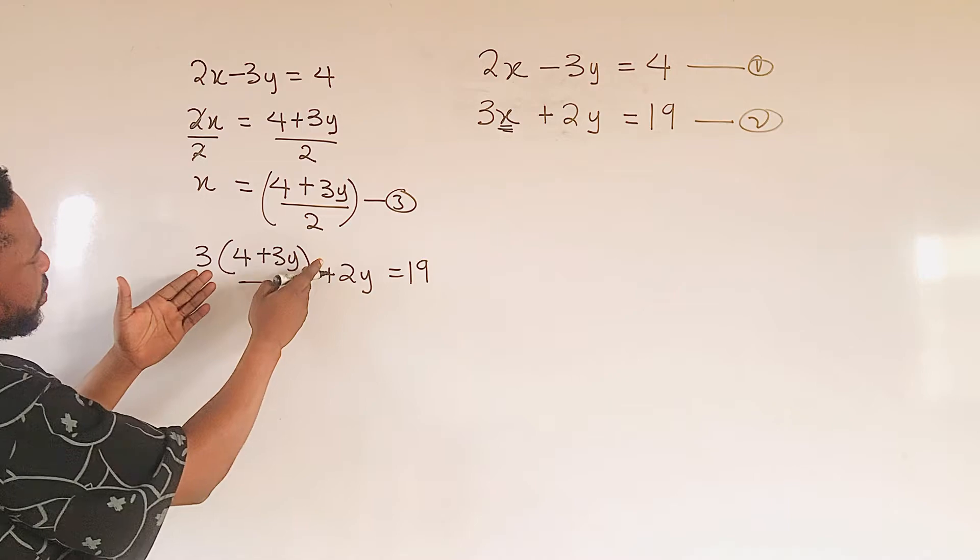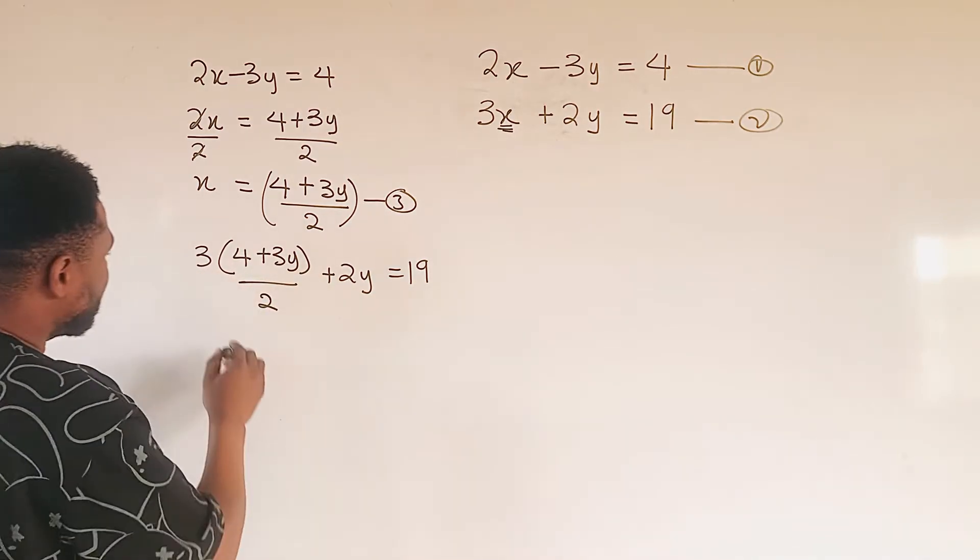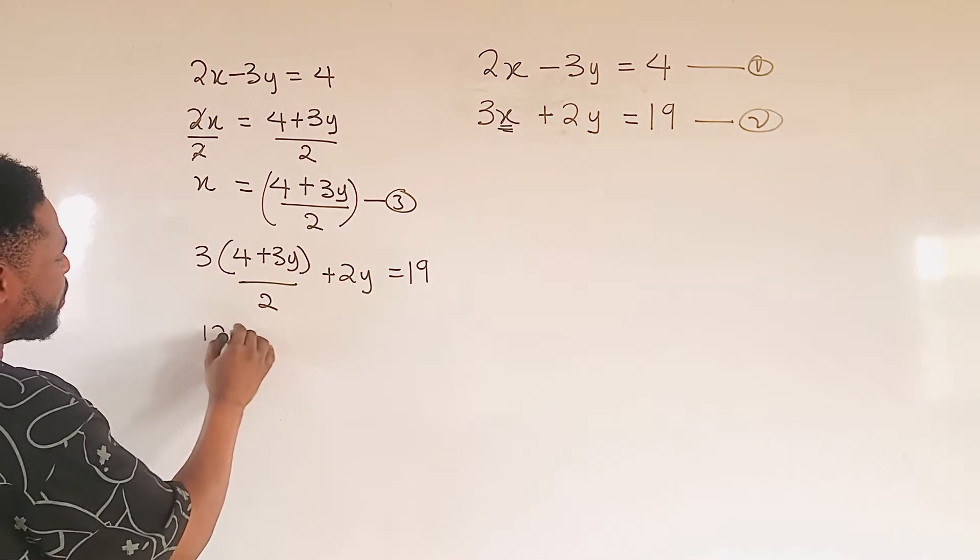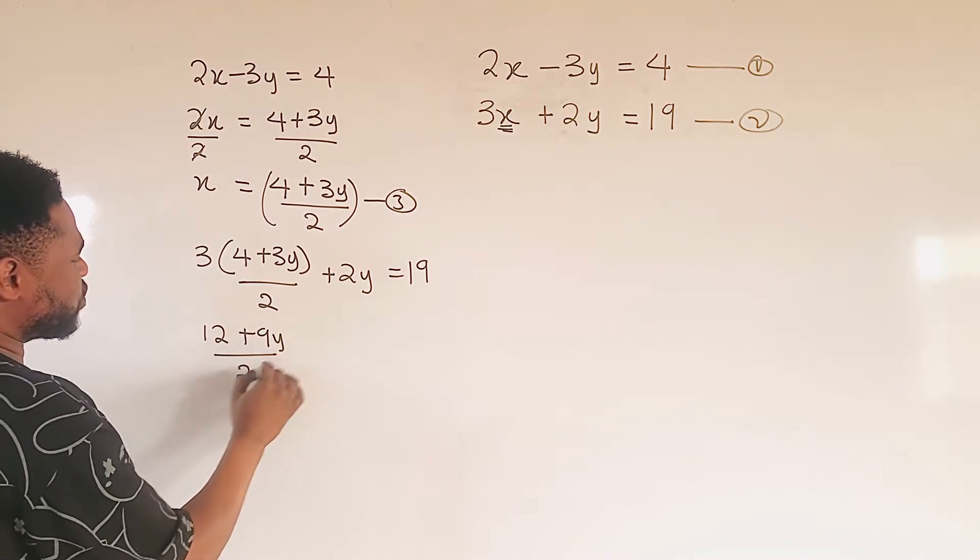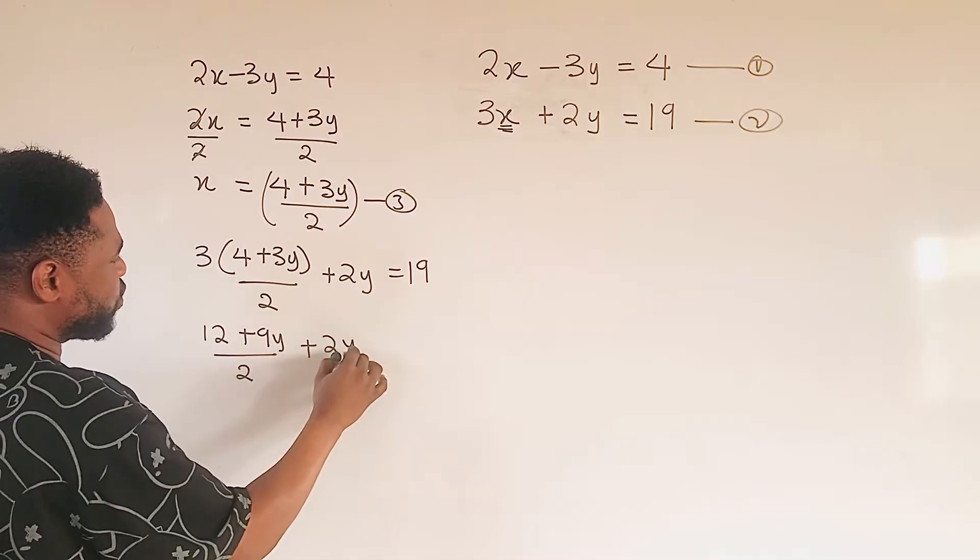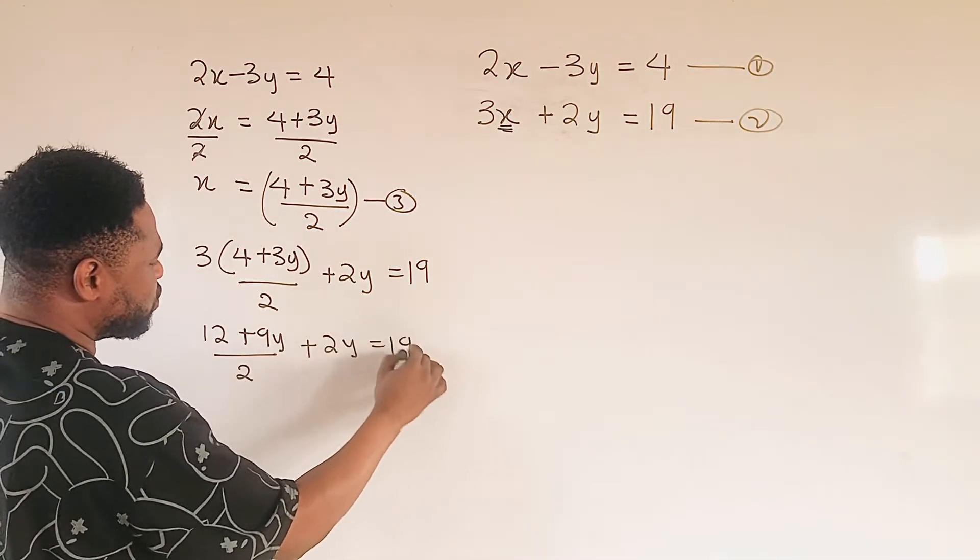At this level, we remove the bracket, where we are going to have 12 here, plus 9y, divided by 2, plus 2y, equal to 19.